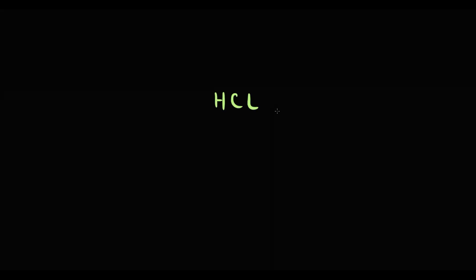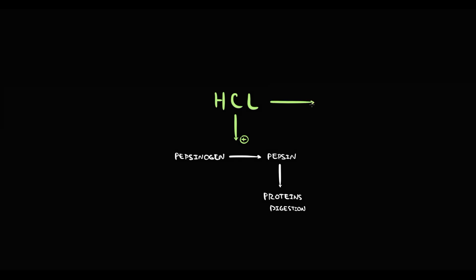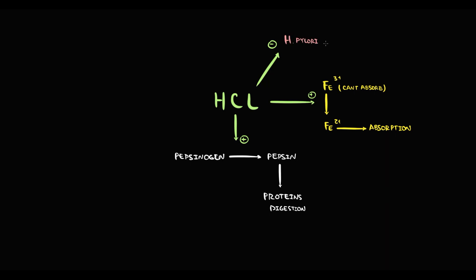Why do we need hydrochloric acid? Hydrochloric acid has a few very important functions. First of all, it converts pepsinogen into pepsin, and pepsin provides protein digestion. Also, hydrochloric acid participates in iron absorption — it converts Fe3+ (plus 3 charge iron) into Fe2+ (plus 2 charge iron), and recall that we can absorb only iron with a plus 2 charge.